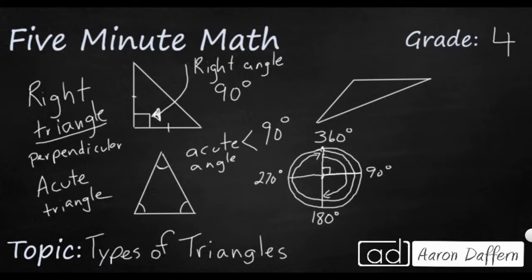So we have first an acute angle is going to be less than 90. And then we've got a right angle that is exactly 90.